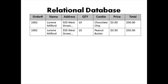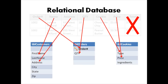With a relational database, we break up information into various tables. In this example, we placed all of our customer information into a customer table, all of our orders information into our orders table, and all of our cookie information into a cookies table. And don't worry about storing that total — that's something that a query can do, and that's another video.